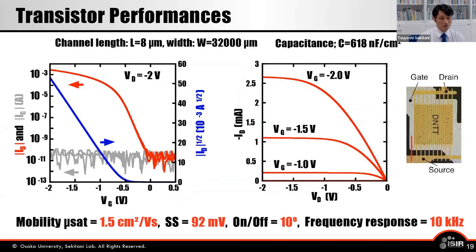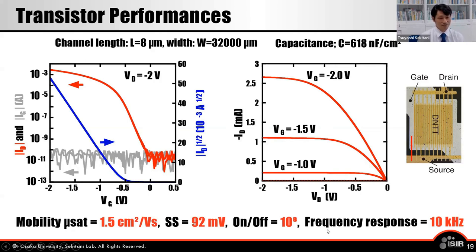These are typical characteristics of the transistors. The channel length is 8 micrometers and width is 32,000 micrometers. The transistor can operate within 2 volts with no hysteresis and no leakage current. The field-effect mobility is 1.5 cm² per volt-second. The subthreshold slope is 92 millivolts per decade. The on-off ratio exceeds 10^8. The frequency response is achieved to around 10 kilohertz — enough to detect vital signals from the body. These transistor performances are excellent and sufficient to monitor biosignals.